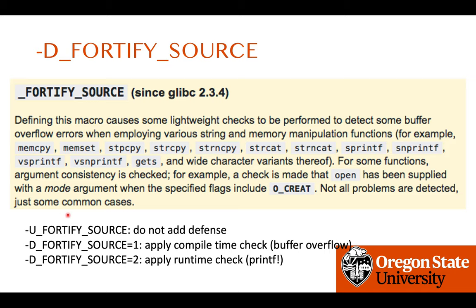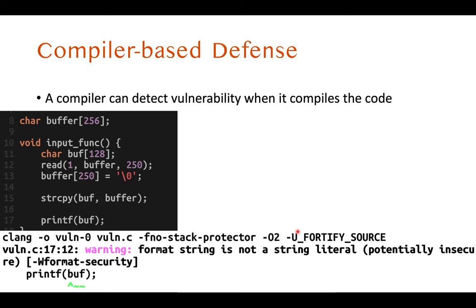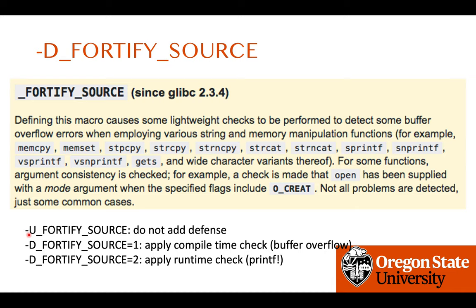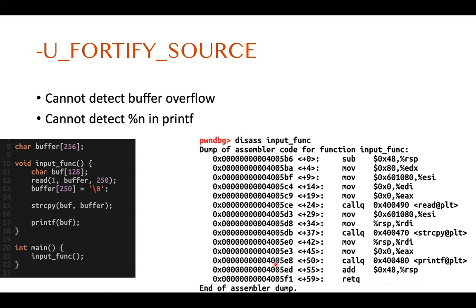Another option for defending against format string and buffer overflow attacks is `_FORTIFY_SOURCE`. In the previous example I used `-U_FORTIFY_SOURCE`, which unsets the default, since the default value is 2. If you set `-D_FORTIFY_SOURCE=1`, it adds only compile-time checks for buffer overflow. If you set `-D_FORTIFY_SOURCE=2`, it also adds a runtime check for printf.